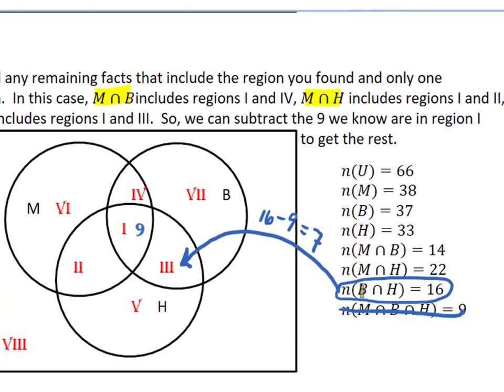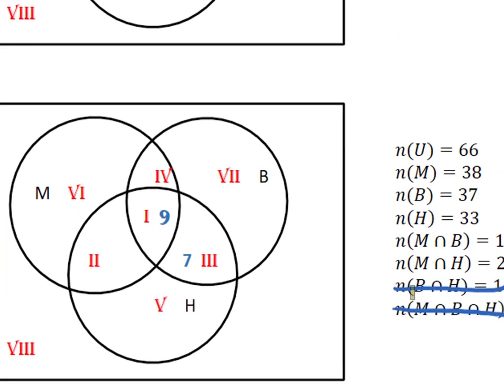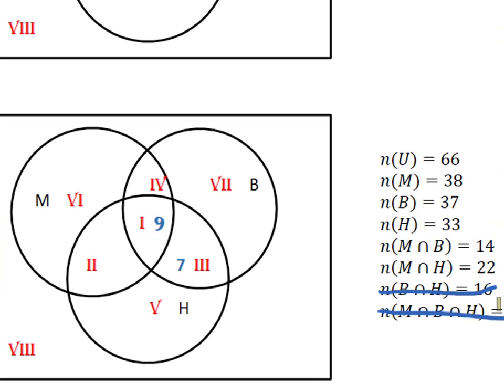So for example, B intersect H would include regions 1 and 3. So if B intersect H has 16 elements, 16 minus 9 equals 7 elements in region 3. So let's label that. Cross off the fact that we just used, because we're not going to use it anymore.